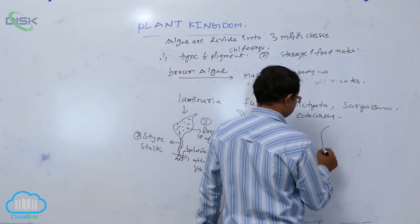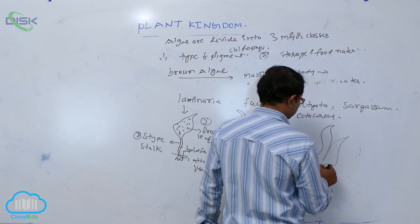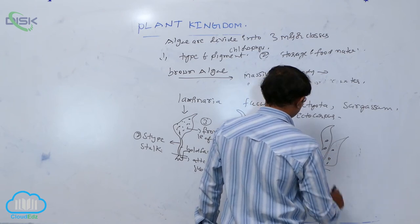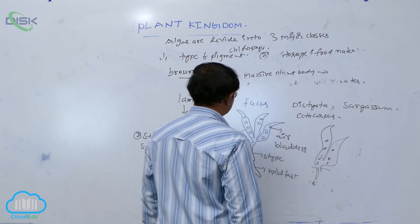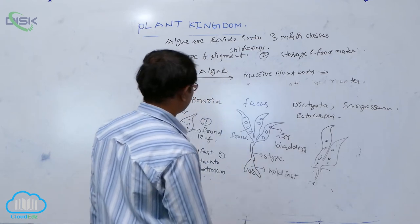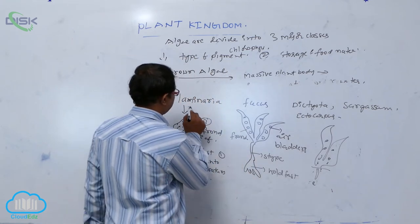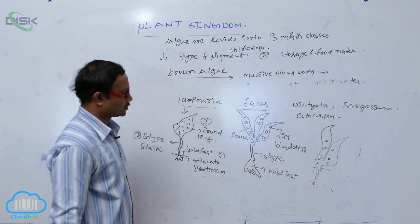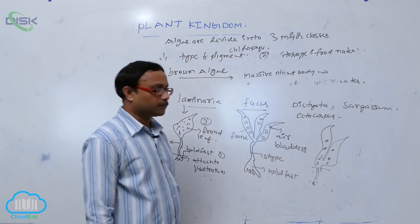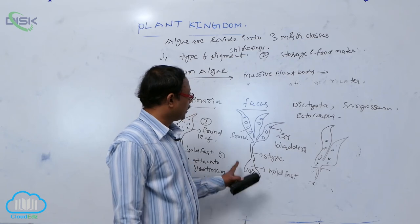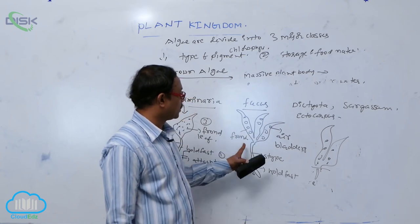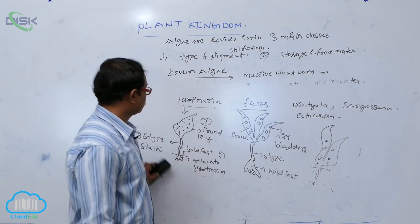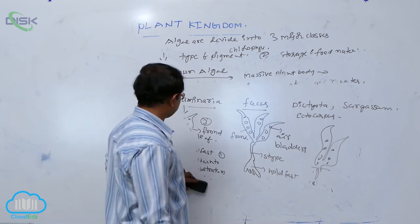Dictyota, Sargassum, and Ectocarpus are other examples. The Laminaria and Fucus diagrams are important for objective questions. The brown alga that has air bladders in the frond is Fucus, which is also known as kelp.